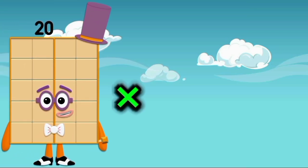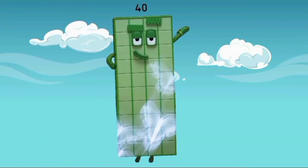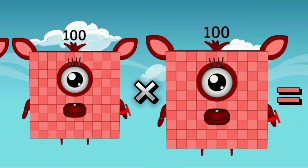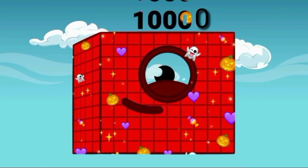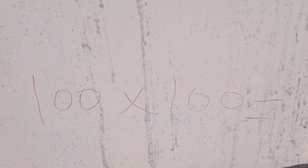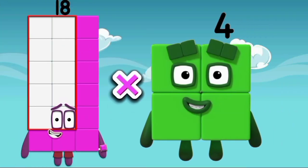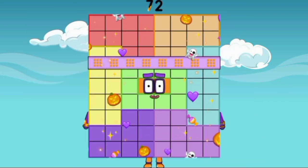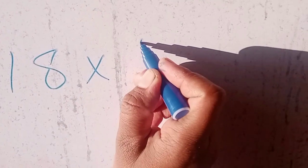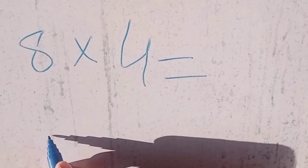20 x 2 is equal to 40. 100 x 100 is equal to 10,000. The last is 18 x 4 is equal to 72.